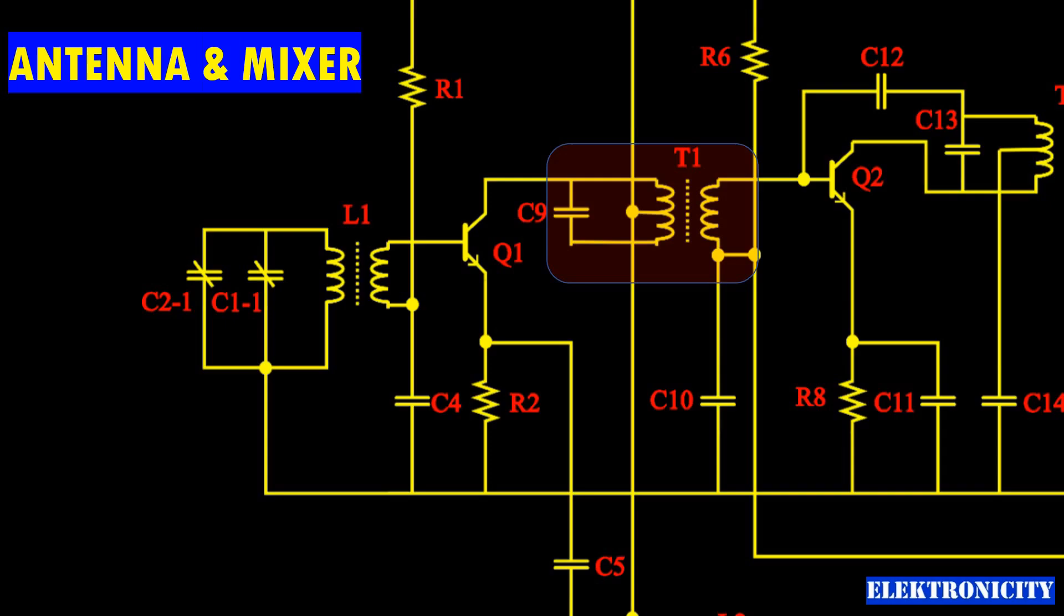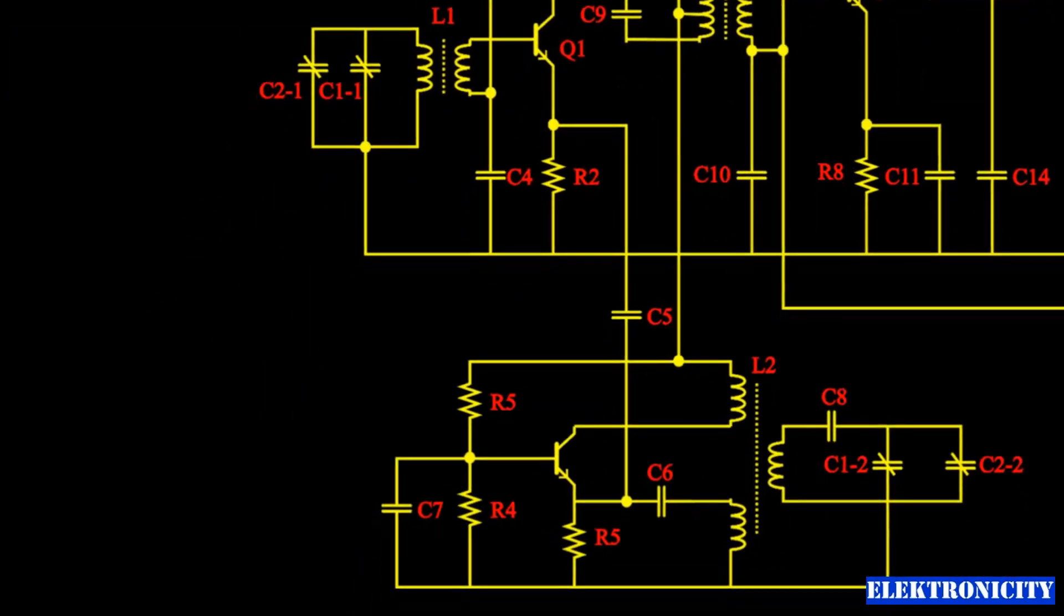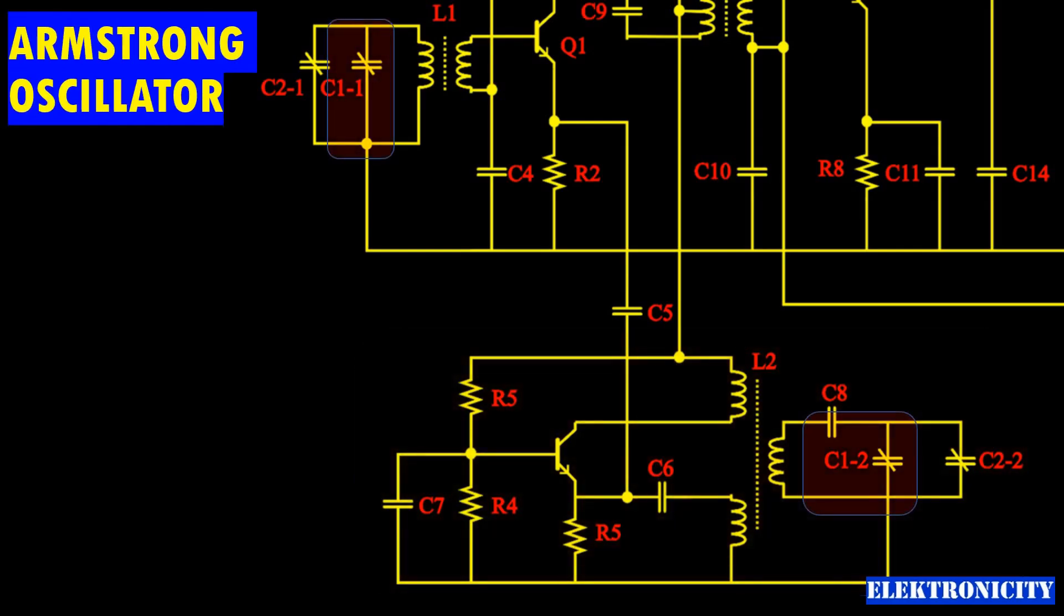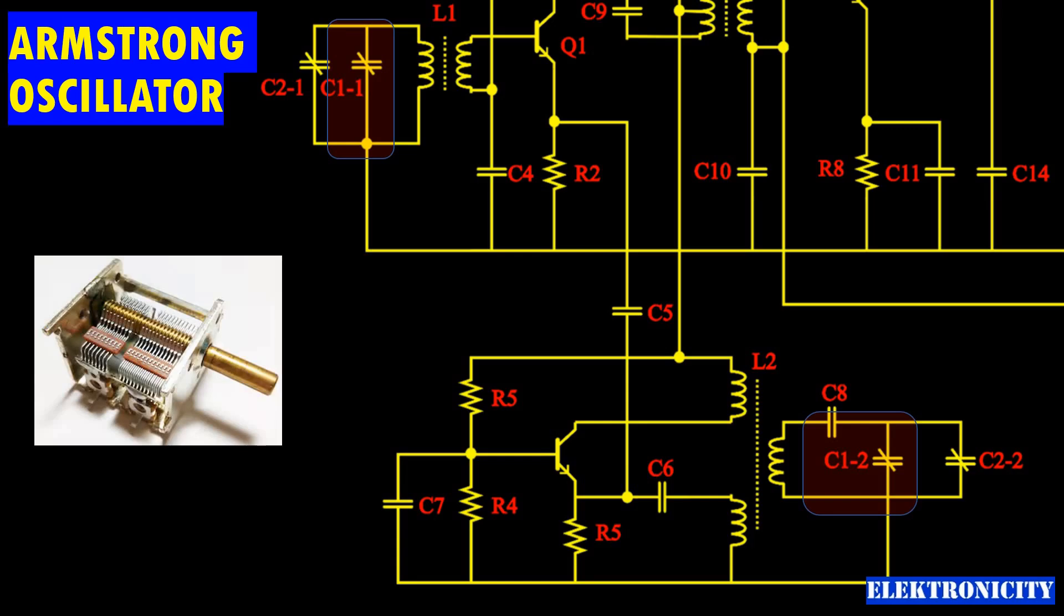Armstrong oscillator: here C12 is tuned together with C11 to maintain a consistent 455 kilohertz difference between LO and RF frequencies. This is typically achieved using ganged capacitors that adjust their values simultaneously.